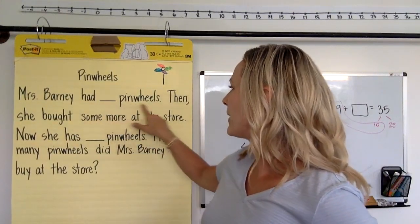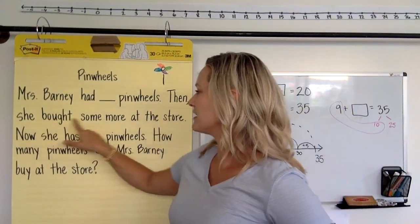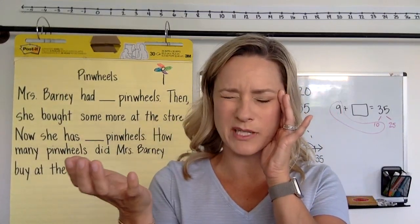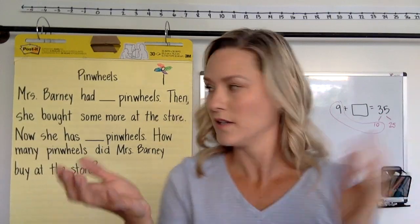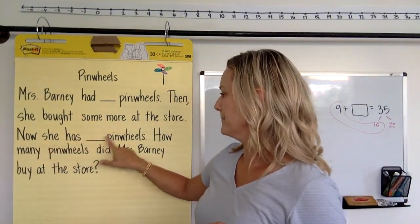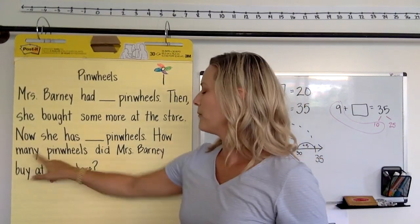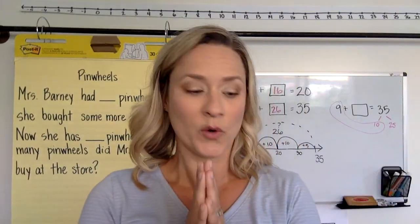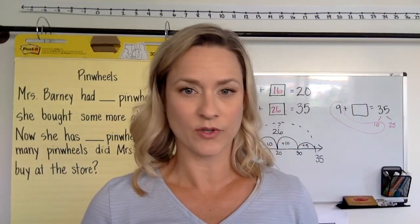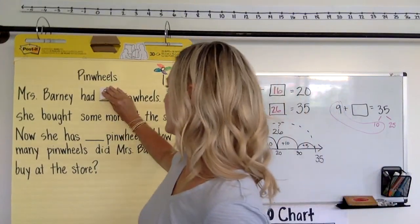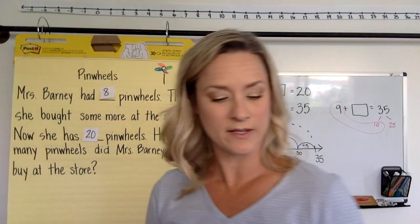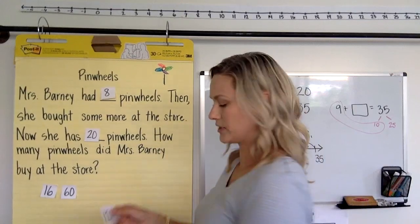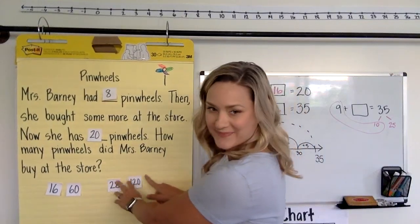Mrs. Barney had some pinwheels. Then she bought some more at the store. So imagine Mrs. Barney already had some pinwheels, now she's buying some more. Now she has pinwheels. How many pinwheels did Mrs. Barney buy at the store? So let's check out this story with some numbers. So here is our first set of numbers. We have 8 and 20, or maybe you're going to solve with 16 and 60, or maybe you're going to solve with 28 and 120.